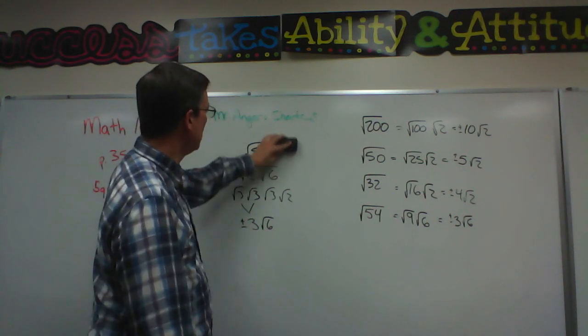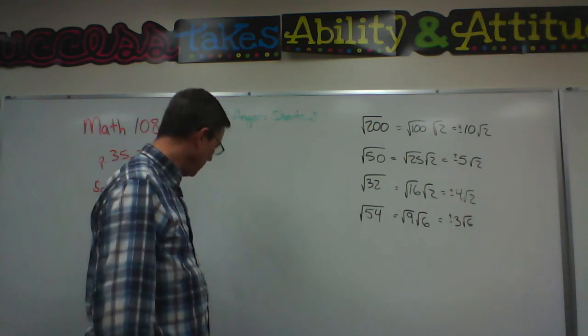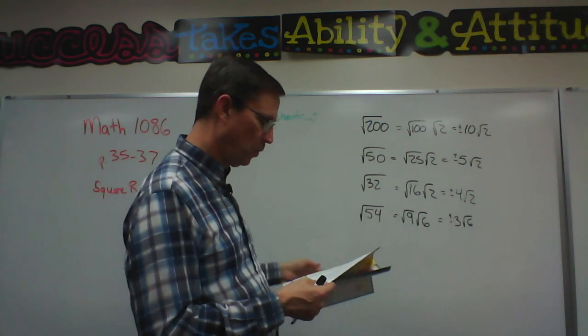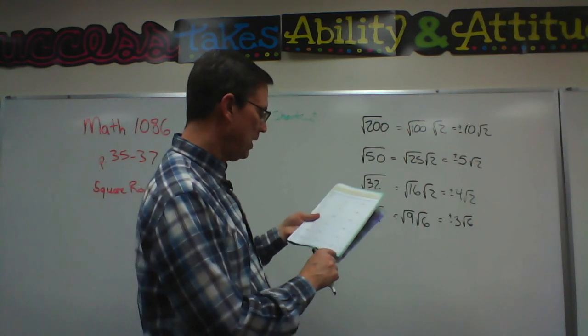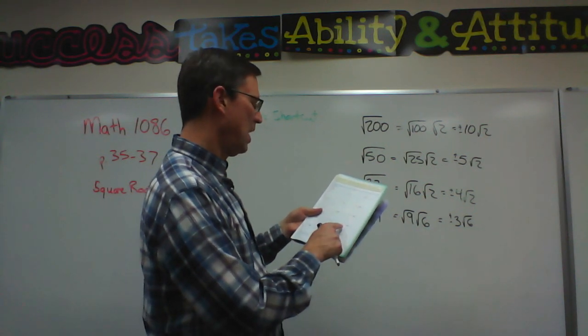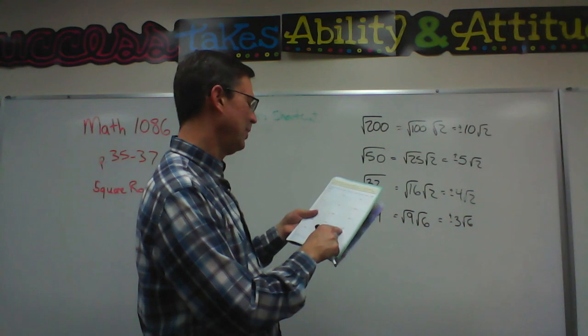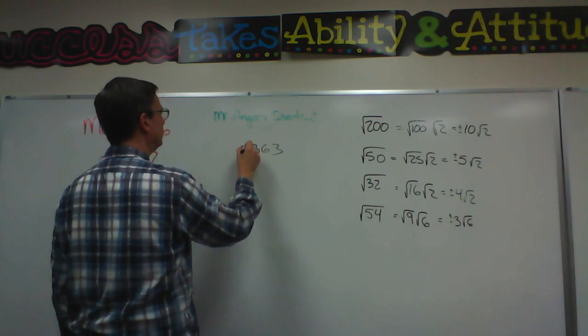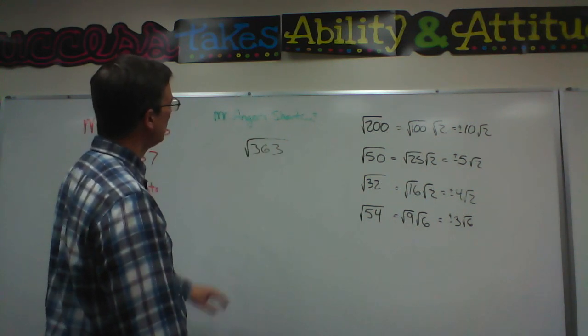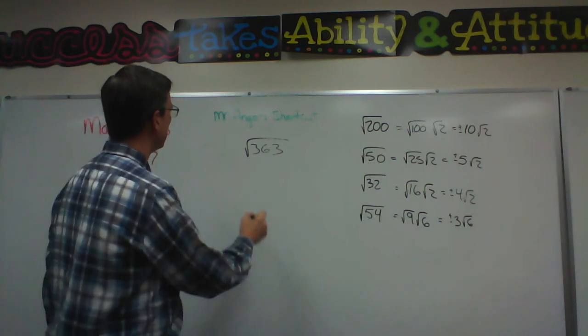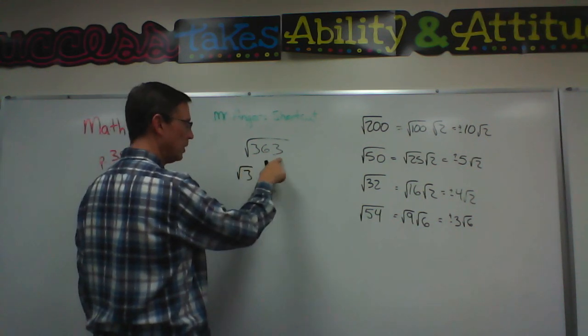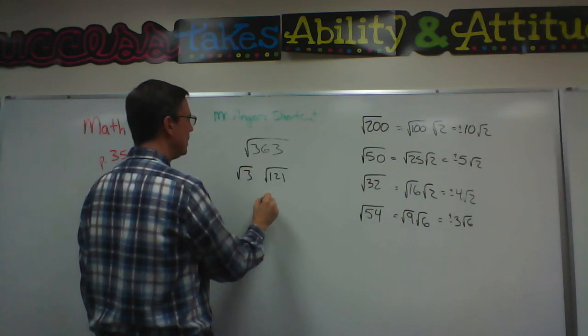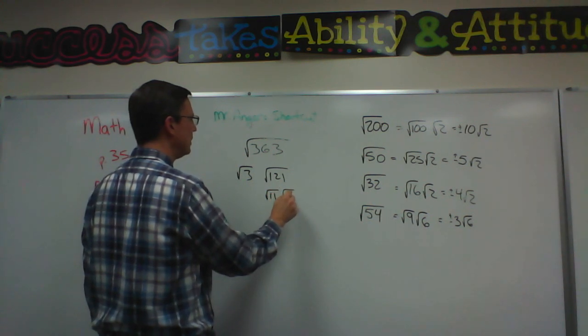Let me look here at the book real quick and see if I find one. On page 38. I'm going to take a big one like 363. What number will go into that? Square root of 3. And if I divide 3, I'll get 121. And the square root of 121 is square root of 11 and 11.